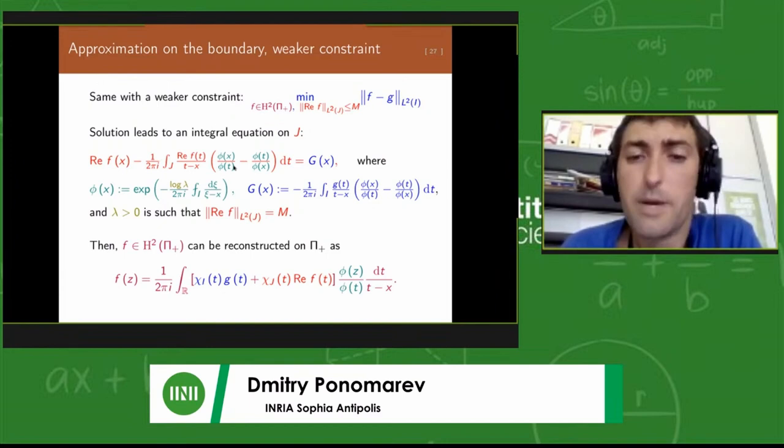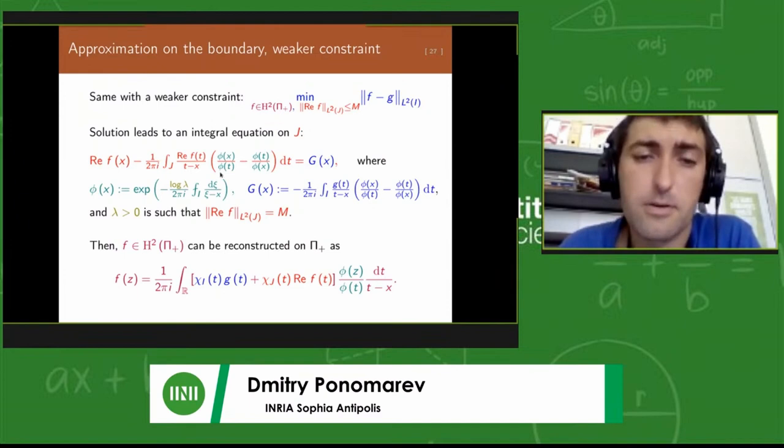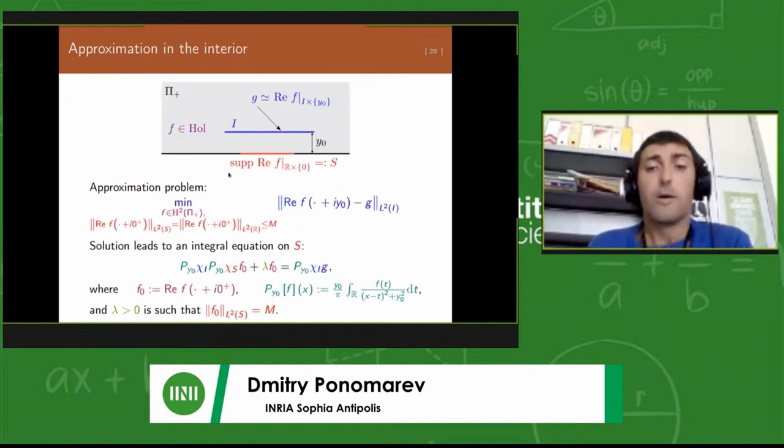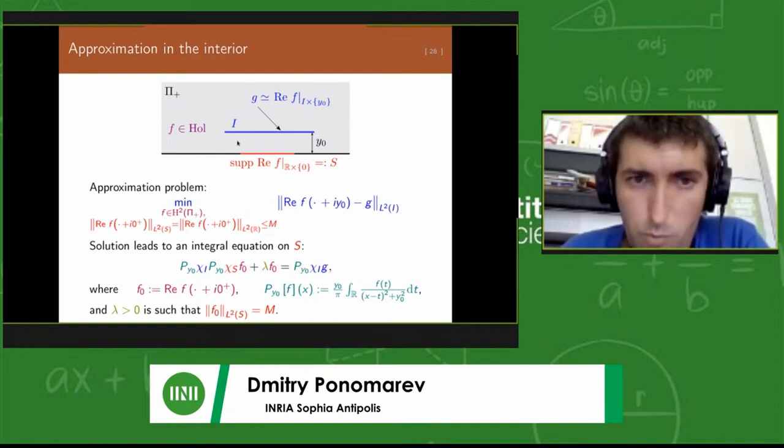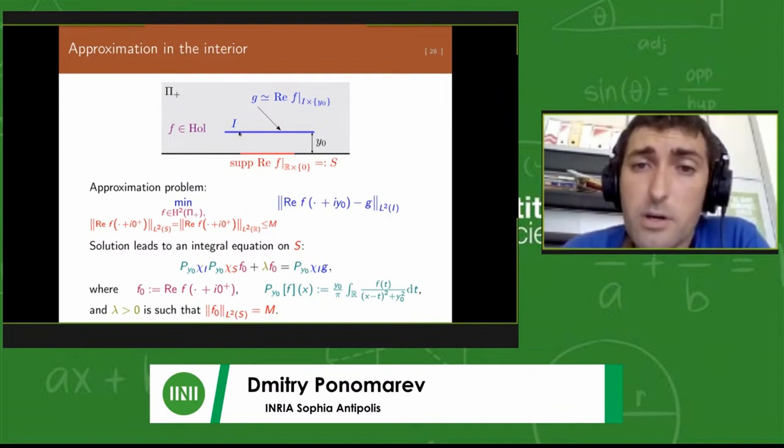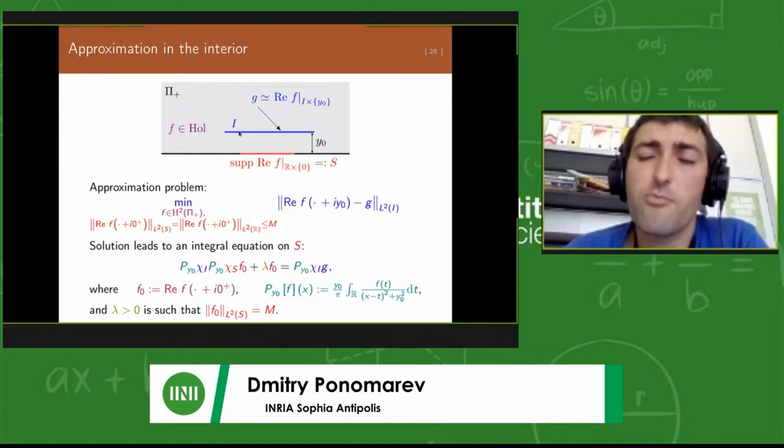It can be identified with a subspace of L2 functions whose Fourier transform vanishes on the negative half-line. These boundary values generate Hardy functions in the space of the upper half-plane. The same problem can be posed and solved in absolutely the same way as for the circle. This is not interesting.